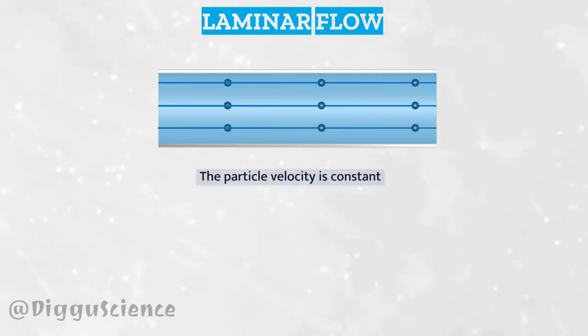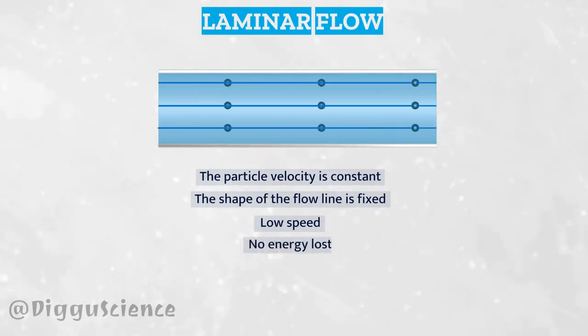In laminar flow, the particle velocity is constant. The shape of the flow line is fixed. In general, laminar flow has a low speed, no energy lost, and satisfies Poiseuille's law.